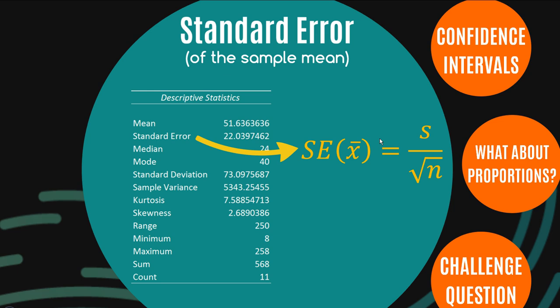So here's the formula. Don't get too excited. It's SE, the standard error of x̄, meaning the sample mean, and it's calculated as s on root n. So it's actually calculated from two of these other measures. There's the standard deviation, which is provided here as 73.097, and n can be found as the count at the bottom of this table, which is 11. And so it's easily calculatable, and we can find that it's 22.03 or 22.0397.